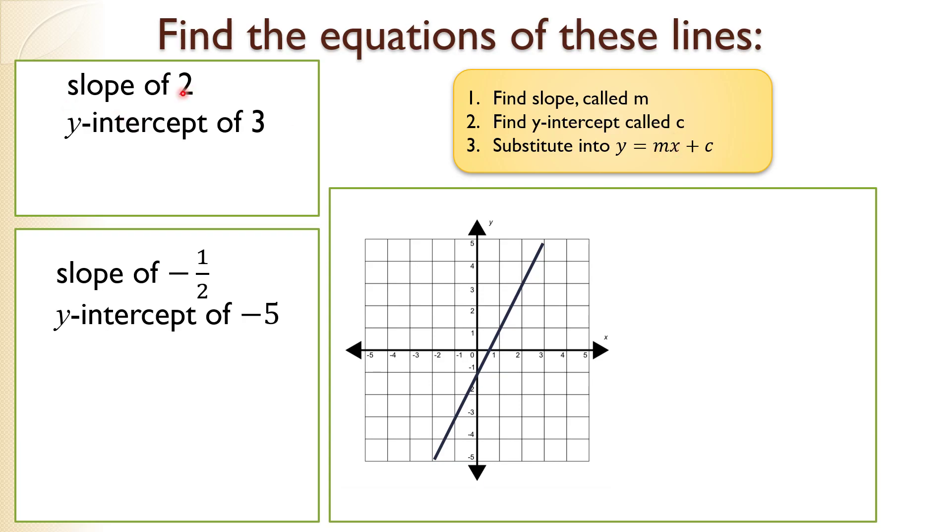This one here, we've actually already done the first step. We were given that this line has a slope of 2 and a y-intercept of 3. So steps 1 and 2 are already done for us. The 2 is m, the slope, and 3 is c, the y-intercept. So y equals mx plus c. M is 2, c is 3. Replace the m with 2 and the c with 3. That's what substitute means—to replace. So we've got the equation for that line.